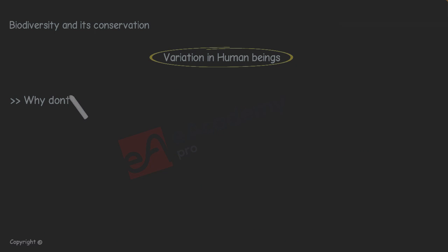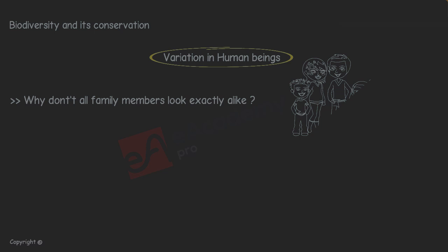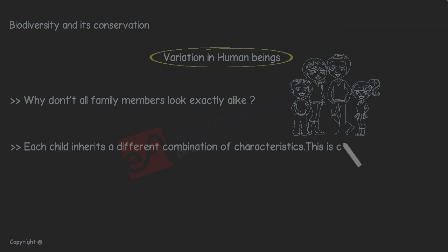So why don't all family members look exactly alike? Variation can come about for two reasons. Children inherit characteristics from their parents. Each child inherits a different combination of characteristics. This is called inherited variation.